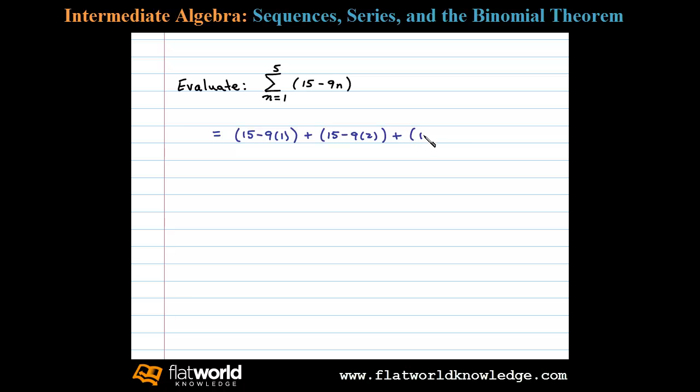Plus the third term here, 15 minus 9 times 3, plus when n is 4 we have 15 minus 9 times 4, and then finally when n is 5 we have plus 15 minus 9 times 5.